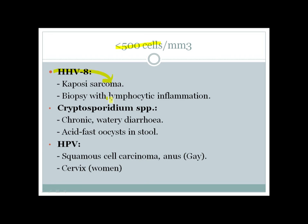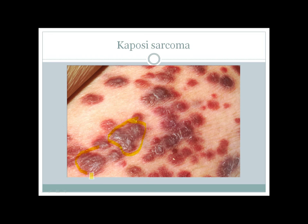Other infections occurring at CD4 less than 500 include human herpesvirus 8 infection leading to Kaposi's sarcoma — biopsy shows lymphocytic inflammation. There can also be infection with Cryptosporidium causing chronic watery diarrhea; a stool sample stained with modified acid-fast stain will show acid-fast oocysts. Patients can also get infected with HPV: males can develop squamous cell carcinoma of the anus, and females can develop cervical carcinoma. Here you can see violaceous nodules — those are the lesions of Kaposi's sarcoma.